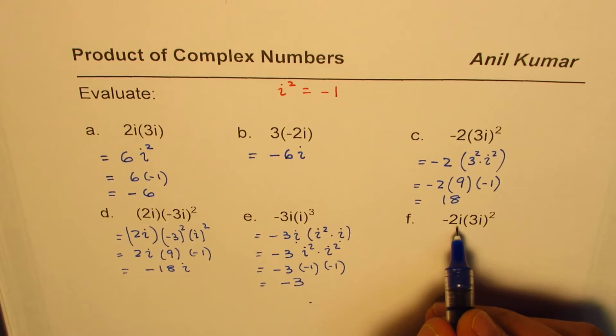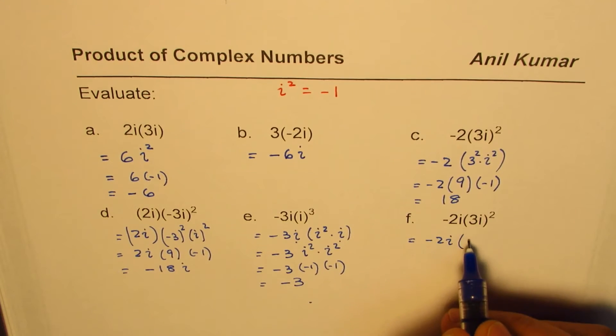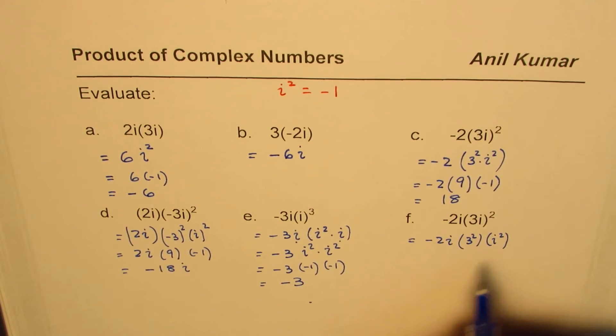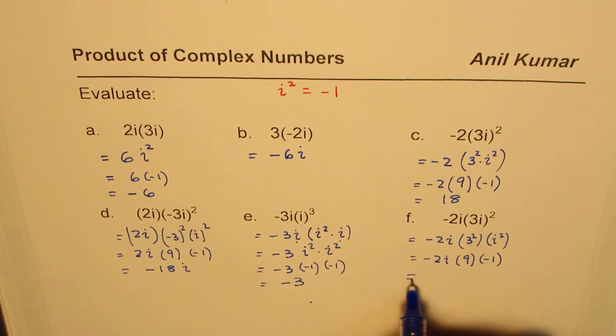Example f: -2i times (3i)² means -2i times 3² times i². So we get -2i times 9 times -1. Minus and minus is positive: 2 times 9 is 18, so 18i. That is how you could solve them.